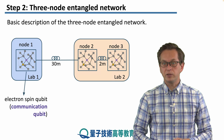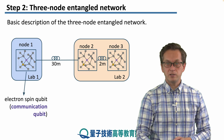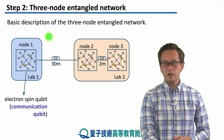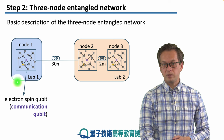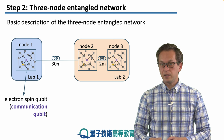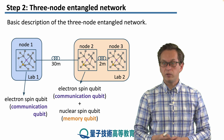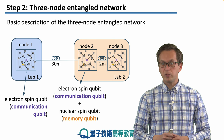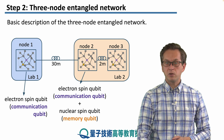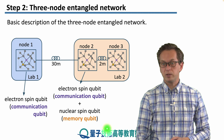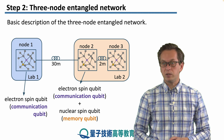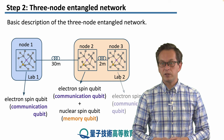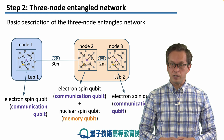Each node contained some qubits. The first node contained a single qubit in the form of an electron spin qubit, called the communication qubit. The second node in lab two contained two qubits: one communication qubit in the form of an electron spin qubit, and also what's called a memory qubit — the nuclear spin qubit in the NV center in diamond. Node three contained a single qubit in the form of a communication qubit.